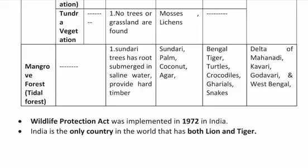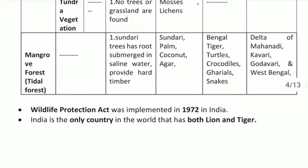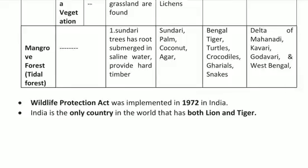The fifth type is Mangrove Forest. Its main characteristic is the Sundari tree, which has roots submerged in saline water. Sundari trees grow in saltwater, so they are abundantly found in mangrove areas. Main trees include sundari, plum, coconut, and agar. Wild animals found here are Bengal tiger, crocodiles, ghariyals, and snakes. These forests are found in the deltas of Mahanadi, Kaveri, Godavari, and West Bengal.